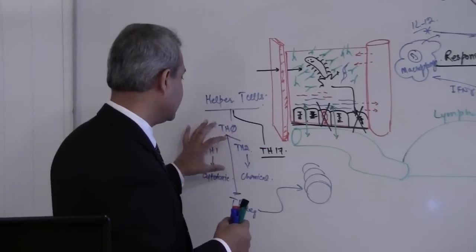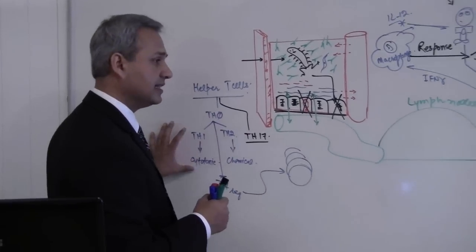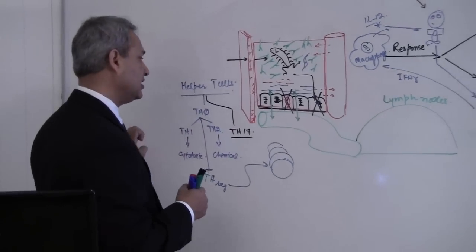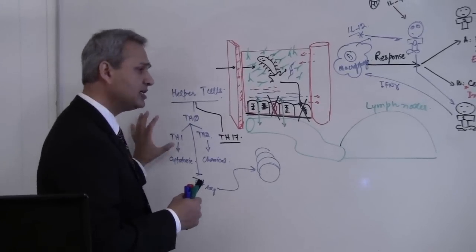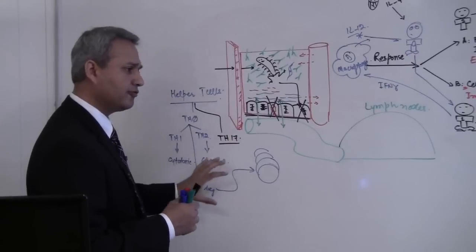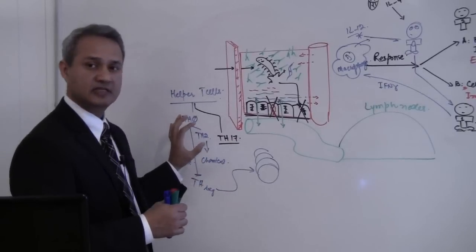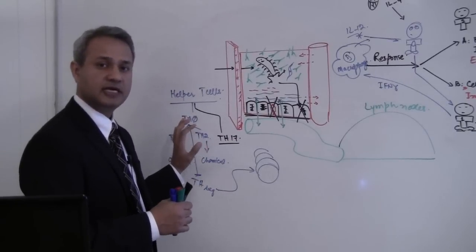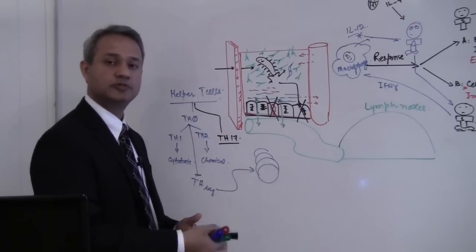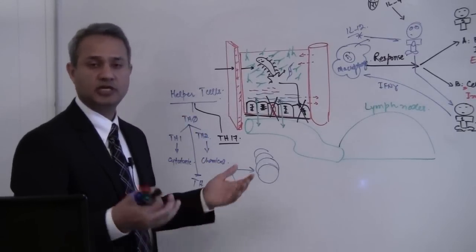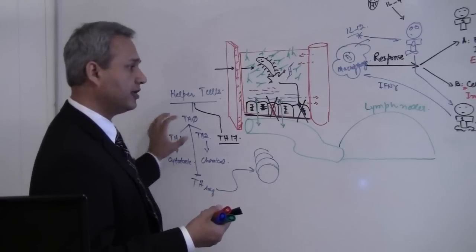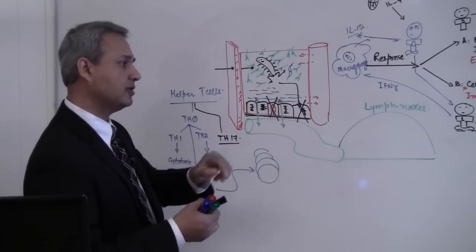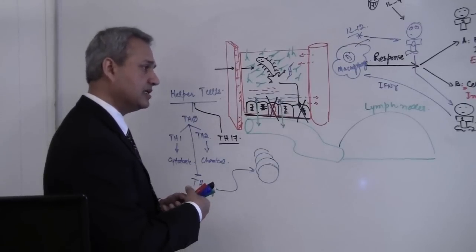These are the T helper cells, and if we consider memory cells, all of these T cells can be converted into memory cells. So that covers the T helper cells.